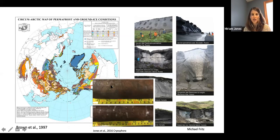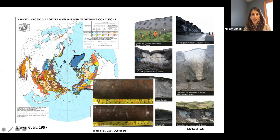Most of you already know what ground ice is. There are some images on the right which show various types of ground ice found in the Arctic. Many of these are very large features — ice wedges and buried glacial ice. And there's also some core imagery from a permafrost peatland in Alaska that also has some ice. Ground ice can take many different forms; it's basically the ice that is found in permafrost.